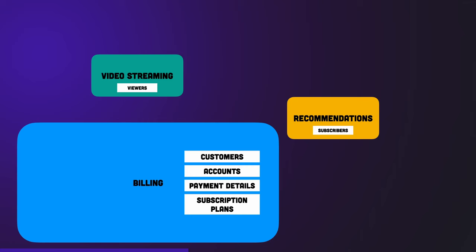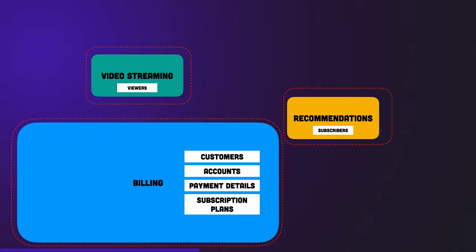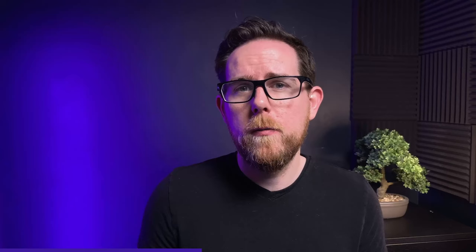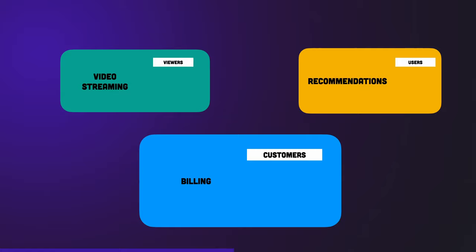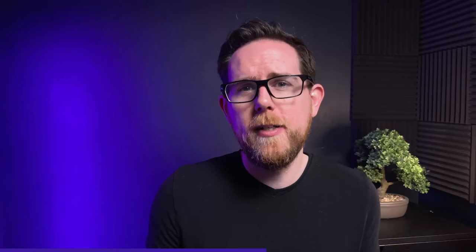DDD copes with this by what is called a bounded context. Each subdomain will have its own bounded context, allowing the language used to be different for each of the subdomains. You don't need to get the whole business to agree on what to call subscribers — you just need to agree on what to call them in each subdomain. If you've done a good job you should find clear separation between the different subdomains and the language used. Each subdomain should have at least a few things that are unique to just that domain. For example, the billing domain will likely have payment details, which you wouldn't expect to see in any of the other domains.